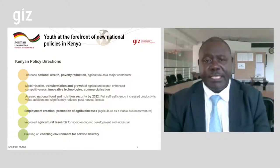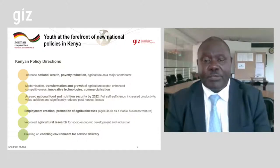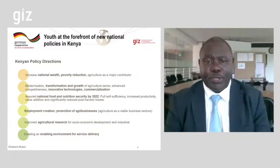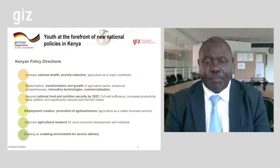Another policy direction is ensuring food and nutrition security. The current government's theme is to attain 100% food security by 2022. Another policy direction is the promotion of agribusiness to create employment in the agriculture sector. Innovation through research is also a policy direction so that new and better methods can be used. Additionally, improving service delivery and creating an enabling environment for youth to participate more in the agriculture sector.